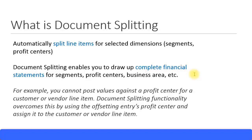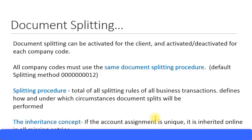Document splitting can be activated for the client and then activated or deactivated for each individual company code. In this way, you can decide which company codes should use document splitting and which should not.